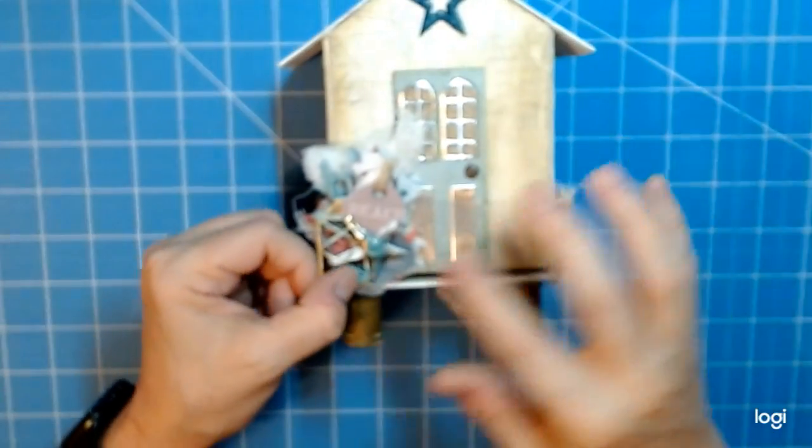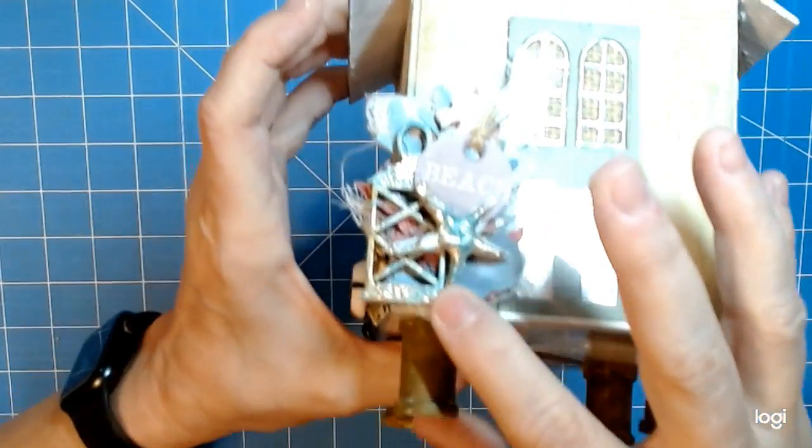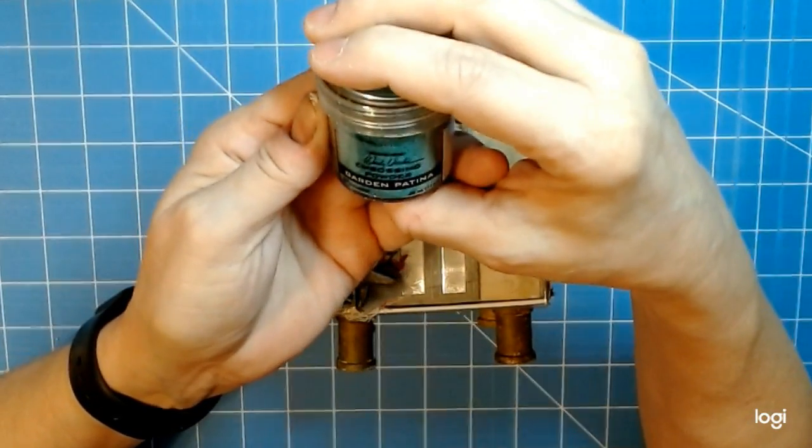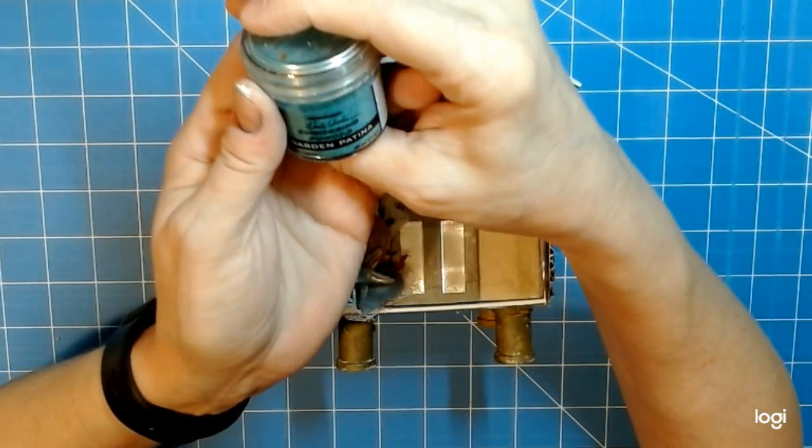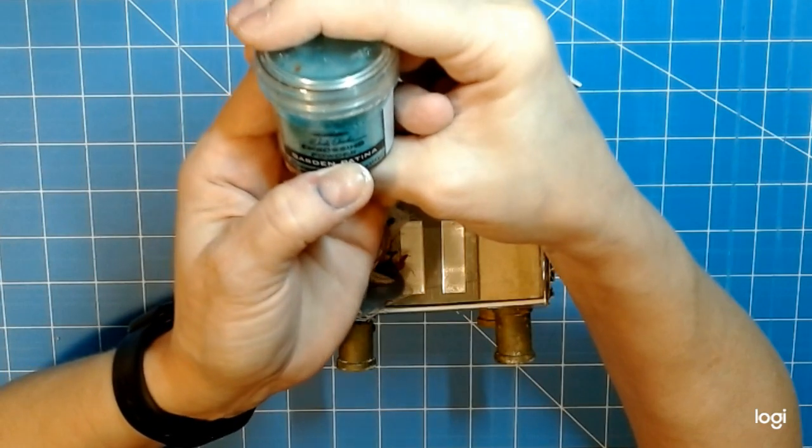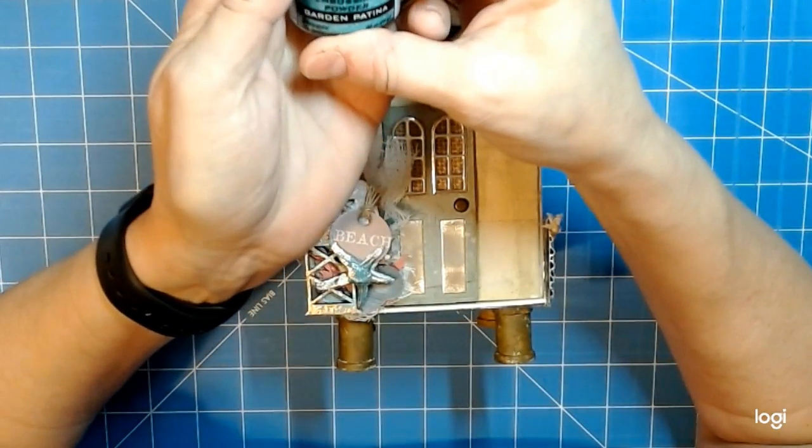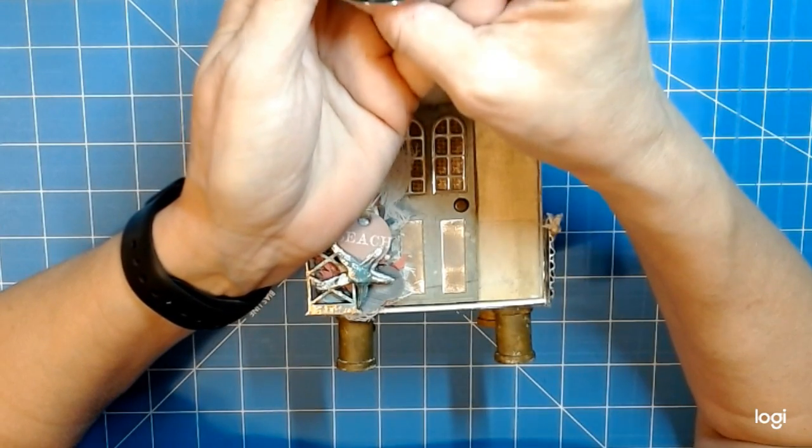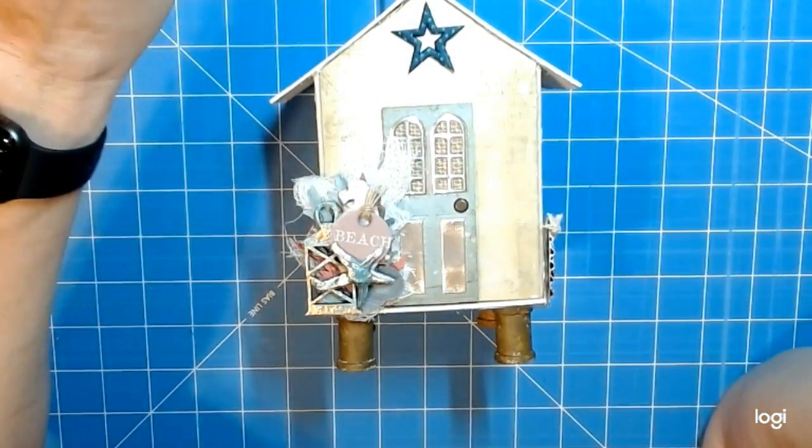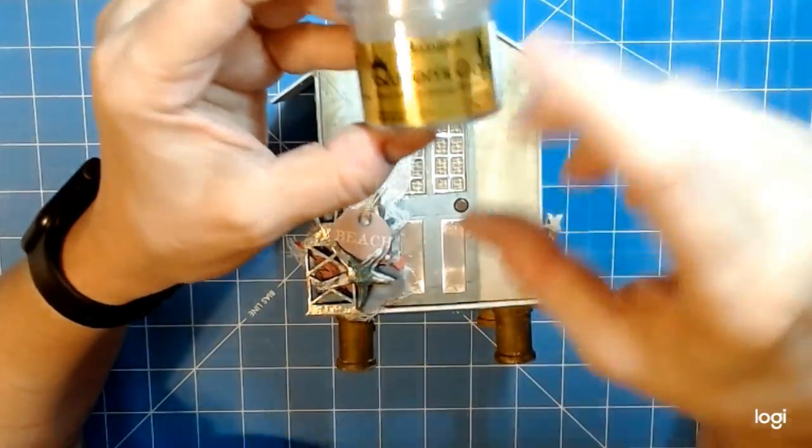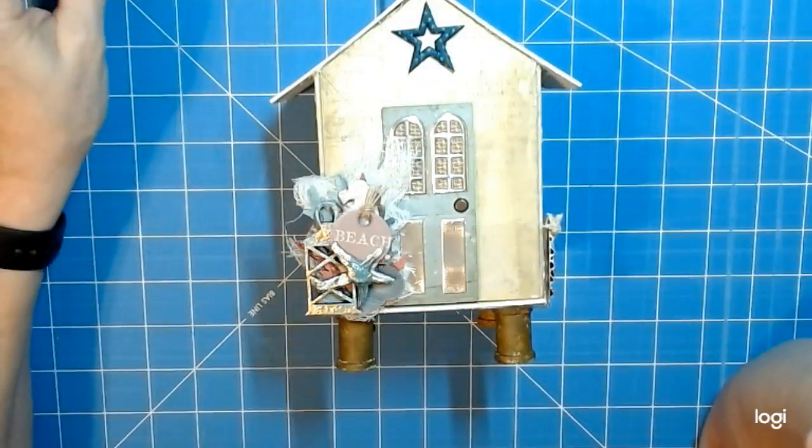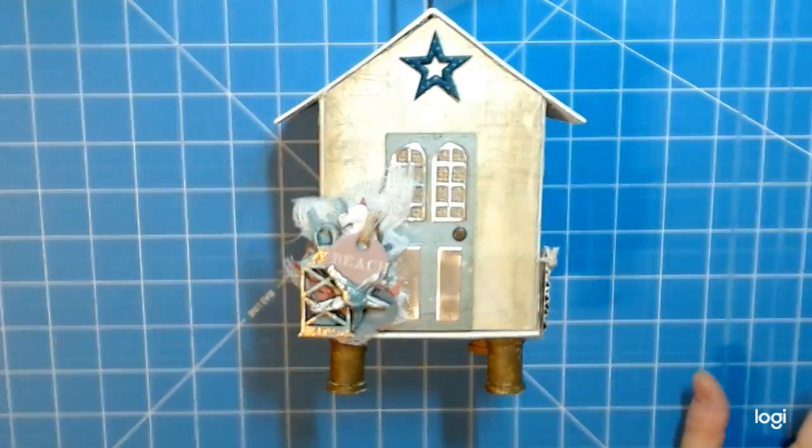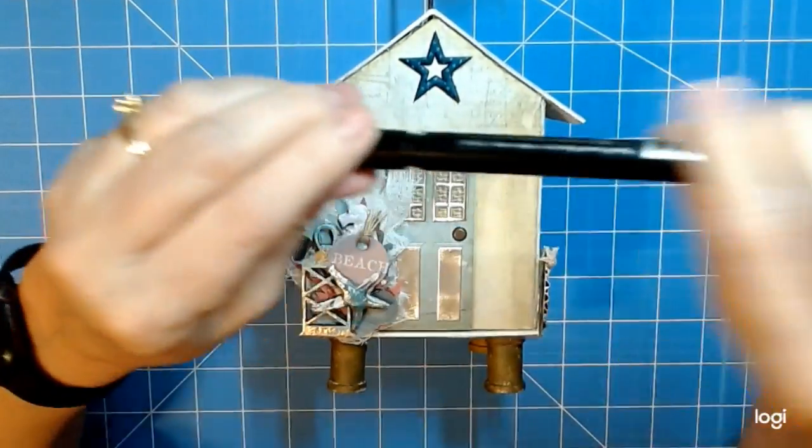And then on the pieces right here for the starfish and the lantern that I used right here, I used this called Garden Patina, and this is made by Wendy Vecchi—I have to look and see who that was made by—but it's called Garden Patina and I just love the color. Then I used some of the Ranger's Queen Gold. I love this right here—it's fine and it's just so pretty, the gold that's on there. I just used a little bit of this.